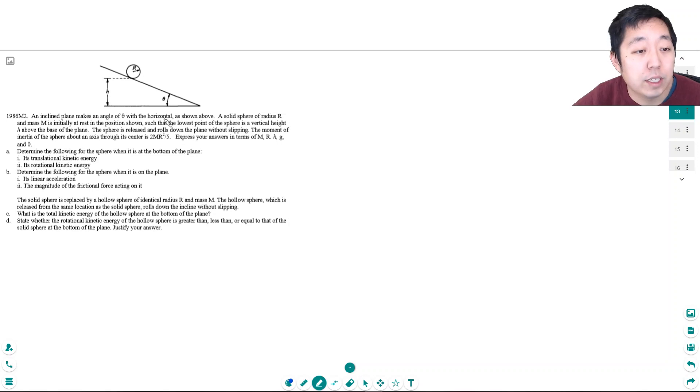An inclined plane makes an angle theta with respect to the horizontal shown above. A solid sphere radius r and mass m initially at the position shown such that the lowest point of the sphere is the vertical height h above the base of the plane. The sphere is released and rolled out of the plane without slipping.